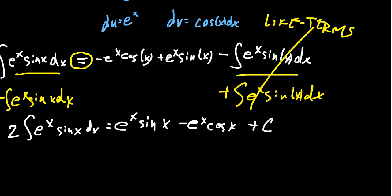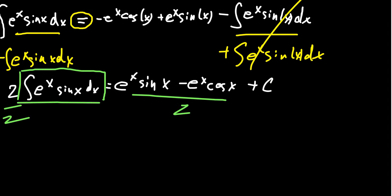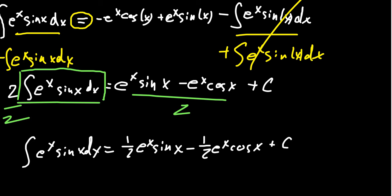And what we're interested in, remember, is this guy right here. We want to know what this antiderivative is. Well, if we divide both sides by two, that does it. And so in the end, we end up with the integral of e to the x sine of x dx. This is equal to one-half e to the x sine of x minus one-half e to the x cosine of x plus a constant. And taking the derivative of this gives you the correct function e to the x sine of x. And that's pretty cool.